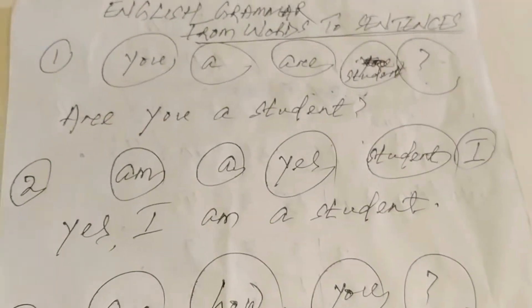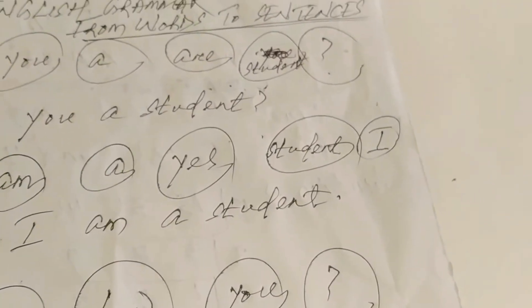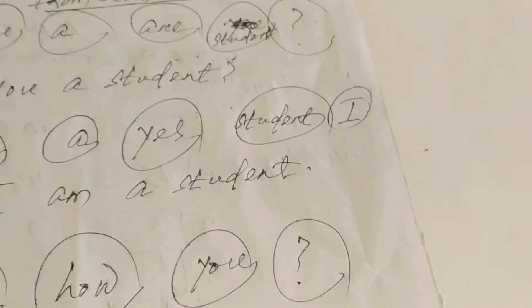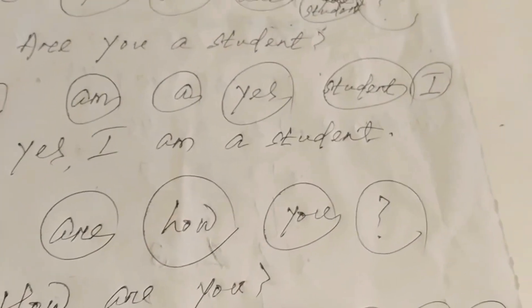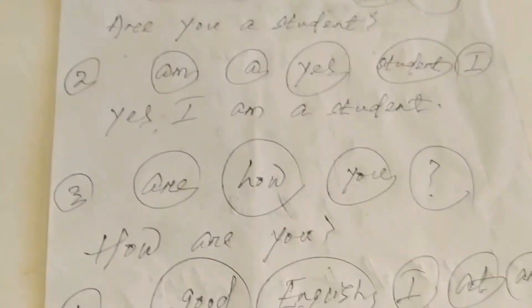Similarly, example 2: am, I, a, student, I. How can we use these words to make a sentence? I am a student. Similarly, example 3: